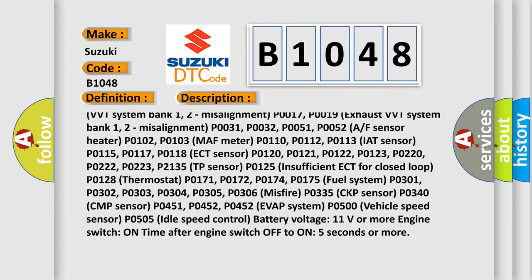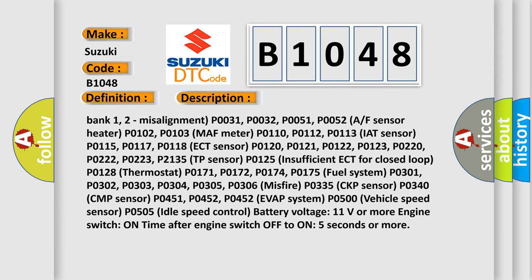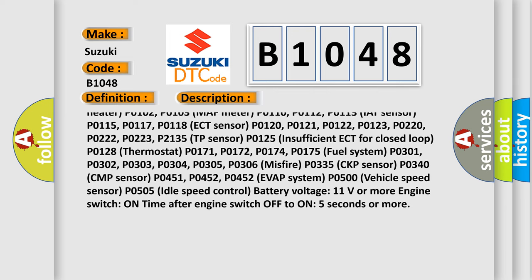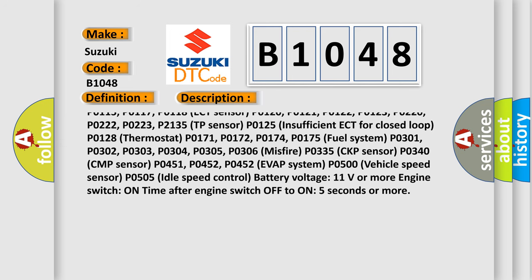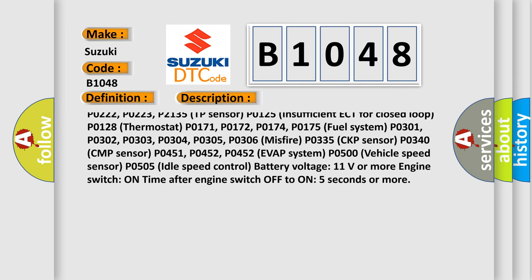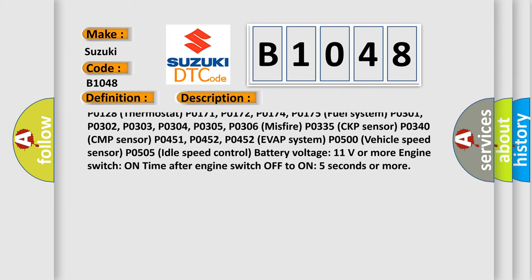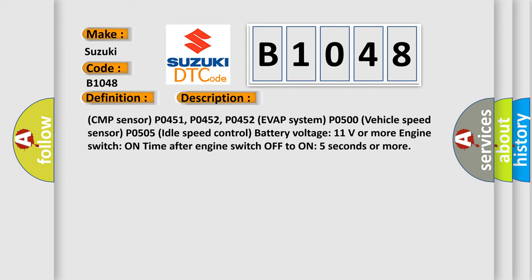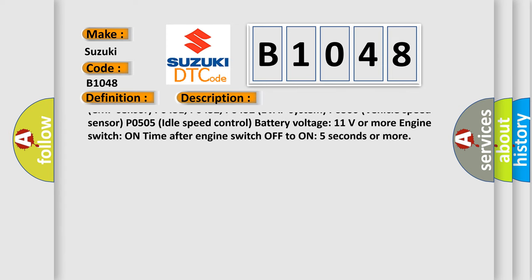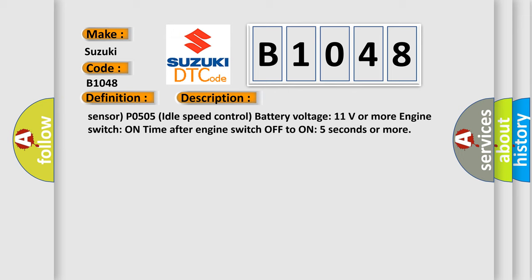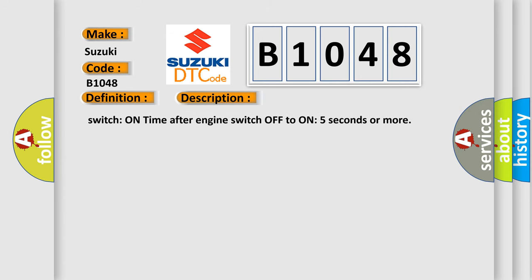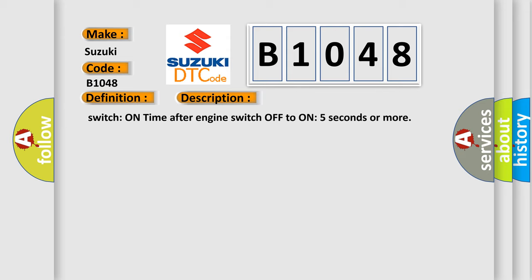P0110, P0112, P0113 — IAT sensor; P0115, P0117, P0118 — ECT sensor; P0120, P0121, P0122, P0123, P0220, P0222, P0223, P2135 — TP sensor; P0125 — insufficient ECT for closed loop; P0128 — thermostat; P0171, P0172, P0174, P0175 — fuel system; P0301 through P0306 — misfire; P0335 — CKP sensor; P0340 — CMP sensor; P0451, P0452 — EVAP system; P0500 — vehicle speed sensor; P0505 — idle speed control. Battery voltage 11 volts or more, engine switch-on time after engine switch off to on 5 seconds or more.